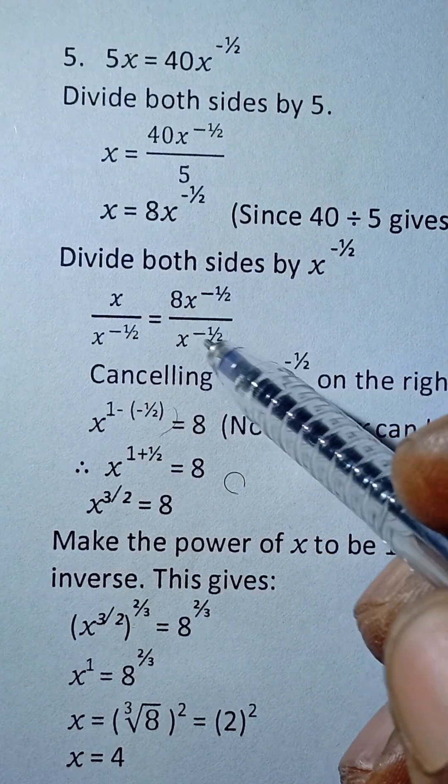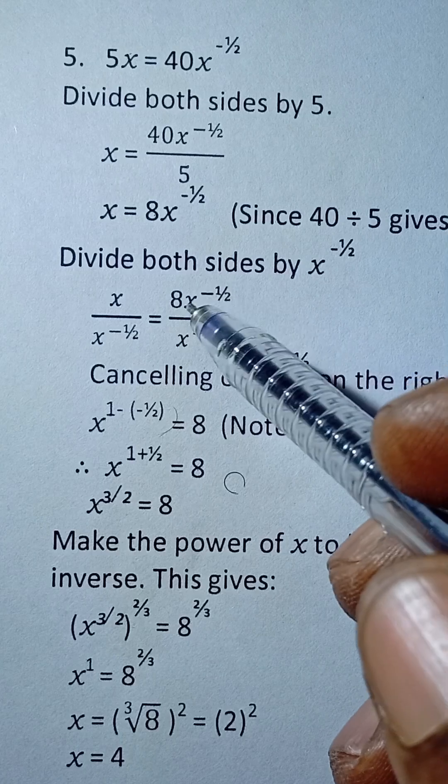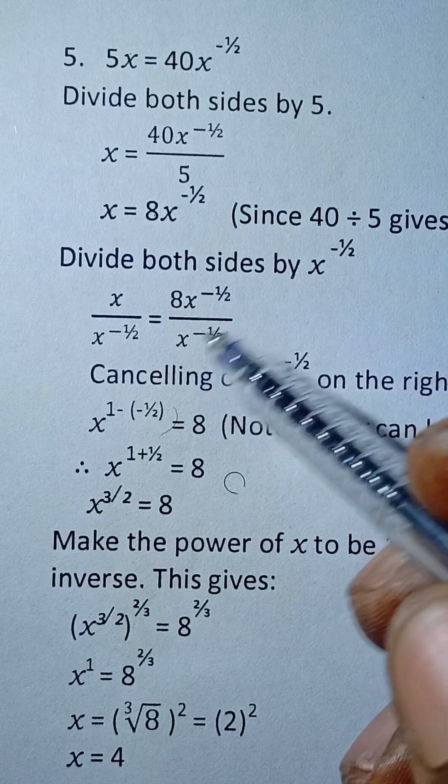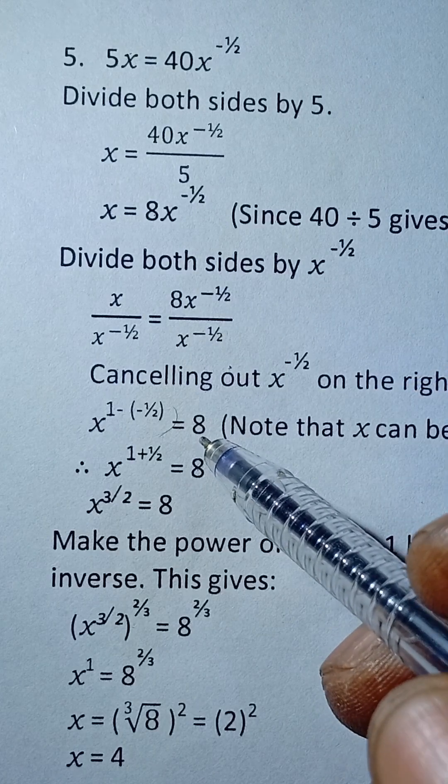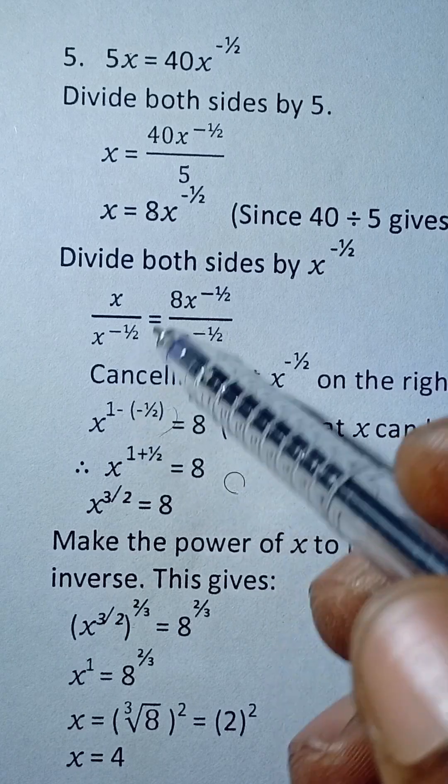Now the next thing is to divide both sides by x raised power minus half so that x raised power minus half we cancel x raised power minus half on this side and we are left with 8.